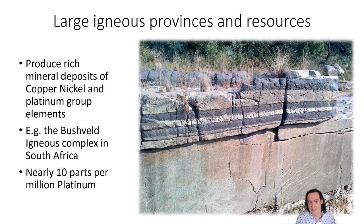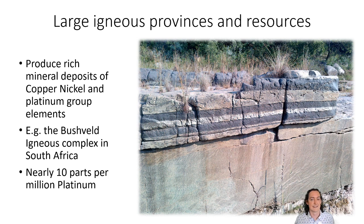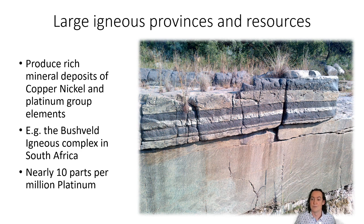The Bushveld Igneous Complex in South Africa is an example — these rocks have nearly 10 parts per million platinum in them. That might not sound like a lot, but on every other rock on the planet you're talking about one to two parts per trillion — so one atom of platinum per every trillion atoms, versus 10 per million here. So while in the past large igneous provinces have caused dramatic climate effects, they could now be the answer to solving some of our climate problems and providing us with the resources we need to combat it.